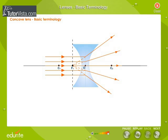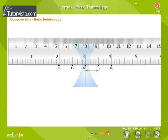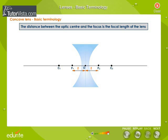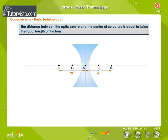Since the lens is transparent, light can pass through the lens in either direction. Thus, there will be two principal foci at equal distances from the optical centre of the lens, provided the medium on either side of the lens is the same. Thus, F1 and F2 are the foci of the given lens. The distance between the optic centre and the focus is the focal length of the lens. The distance between the optic centre and the centre of curvature is equal to twice the focal length of the lens.